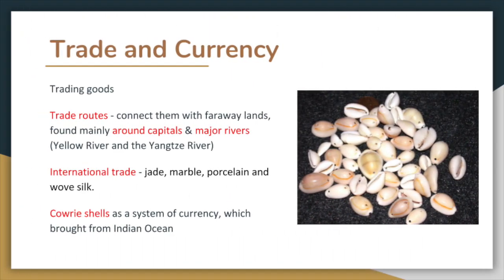Trade and Currency. The Shang were in the business of trading goods and they had trade routes. Trade routes were used to connect them with faraway lands. Trade routes are found mainly around the Shang dynasty capitals and around the major rivers, the Yellow River and the Yangtze or Shangjian River.